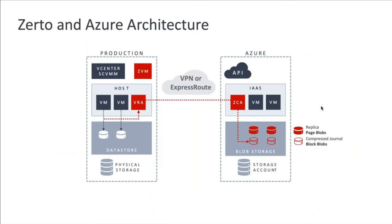Looking at the Zerto and Azure architecture: the production side has the same ZVMs and VRAs. On the Azure side, we have a Zerto Cloud Appliance (ZCA), available from the Azure Marketplace. We take data stored in datastores on-premise and move it into the cloud on a continuous protection basis — not on a schedule every hour or every five minutes, but continuously. RPO will realistically be between five and ten seconds behind production. We store data in two formats in block storage: replica disks are stored in page blobs and journal files are stored in block blobs.